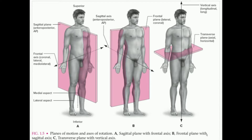A transverse plane separates the body into a top and bottom half. You can raise it to the level of the head or lower it — it doesn't have to be at the waist. Similarly, a sagittal plane right on the midline is called a mid-sagittal plane, but it can also shift to either the right or left. The same goes for the frontal plane, which can move forward or backward.